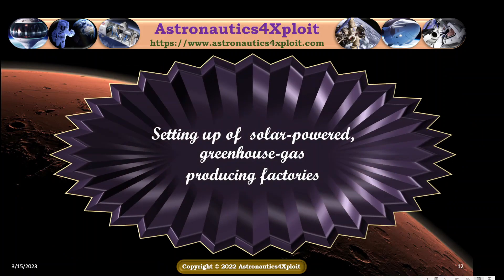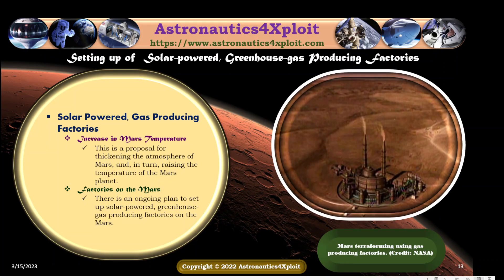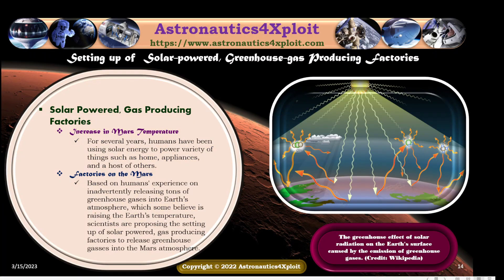Setting up of solar-powered greenhouse gas-producing factories is a proposal for thickening the atmosphere of Mars and in turn raising the temperature of the planet. There is an ongoing plan to set up solar-powered greenhouse gas-producing factories on Mars. Based on humanity's experience of inadvertently releasing tons of greenhouse gases into Earth's atmosphere, which some believe is raising the Earth's temperature, scientists are proposing the setting up of solar-powered gas-producing factories to release greenhouse gases into the Mars atmosphere. The picture here shows the greenhouse effect of solar radiation on the Earth's surface caused by the emission of greenhouse gases.